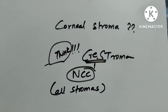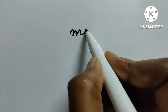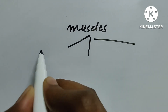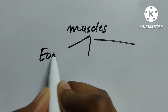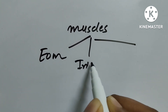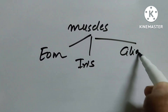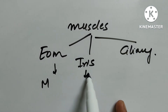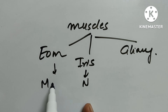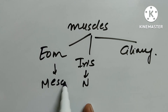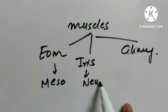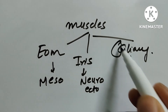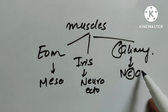The next question is about muscles. There are three kinds of muscles: EOM, iris, and ciliary. EOM is from mesoderm, iris is from neuroectoderm, and ciliary — C — is from neural crest cells.